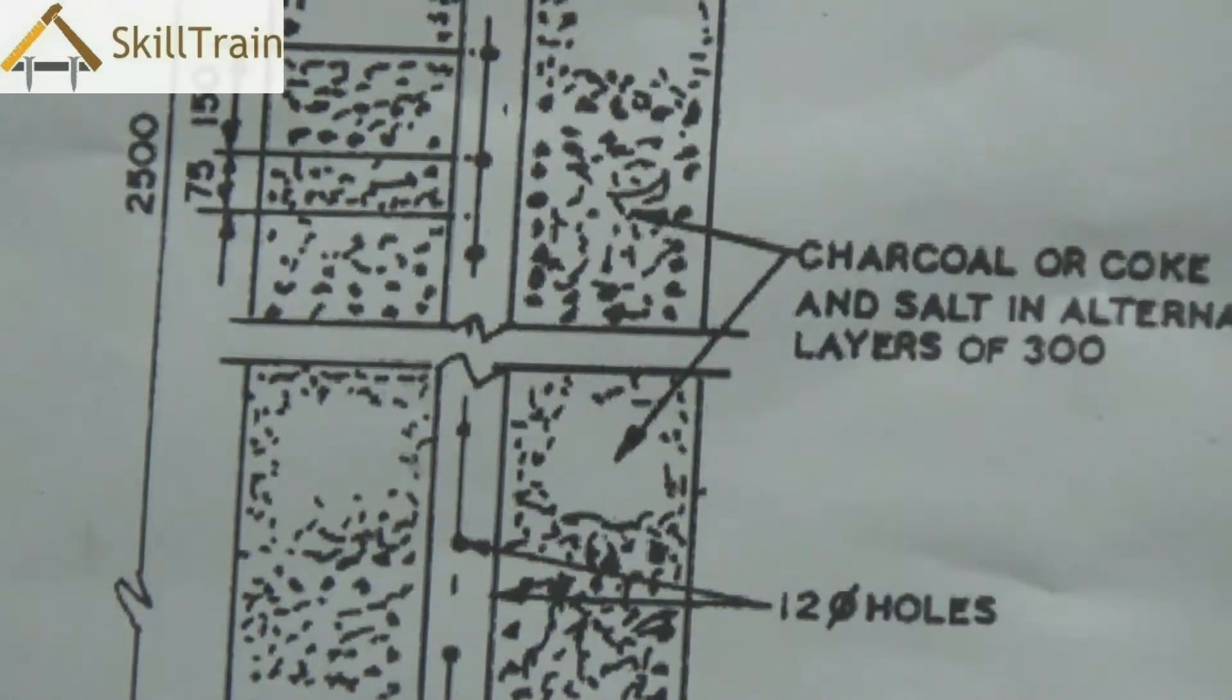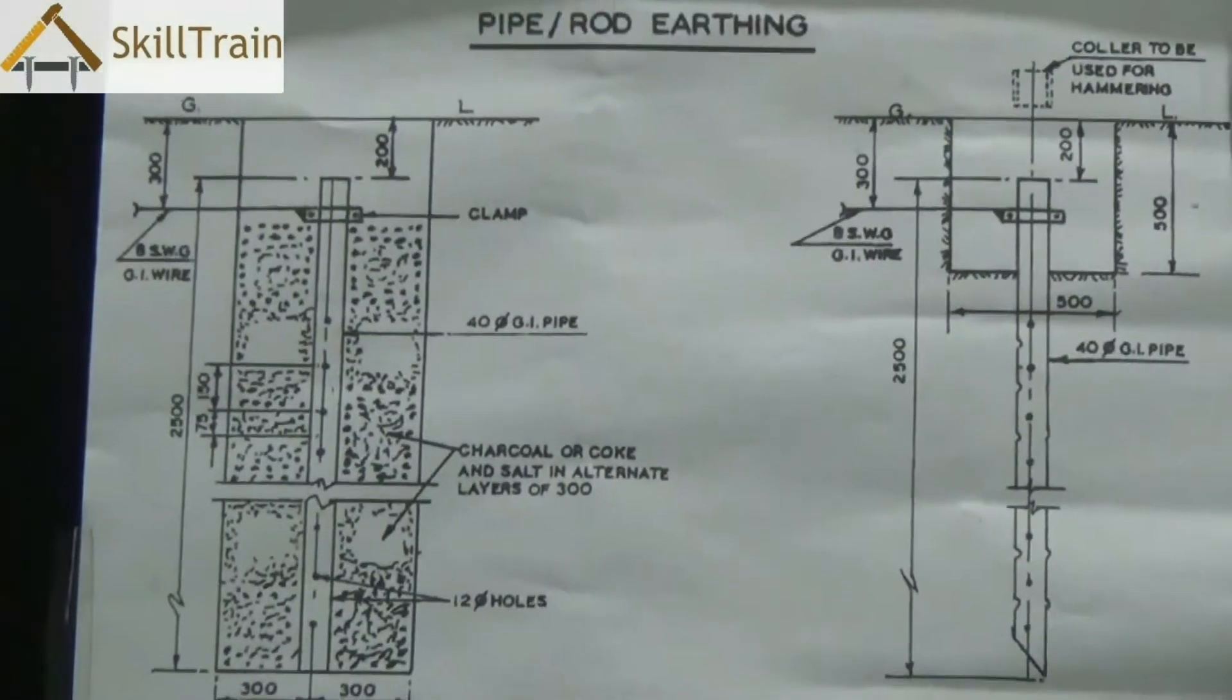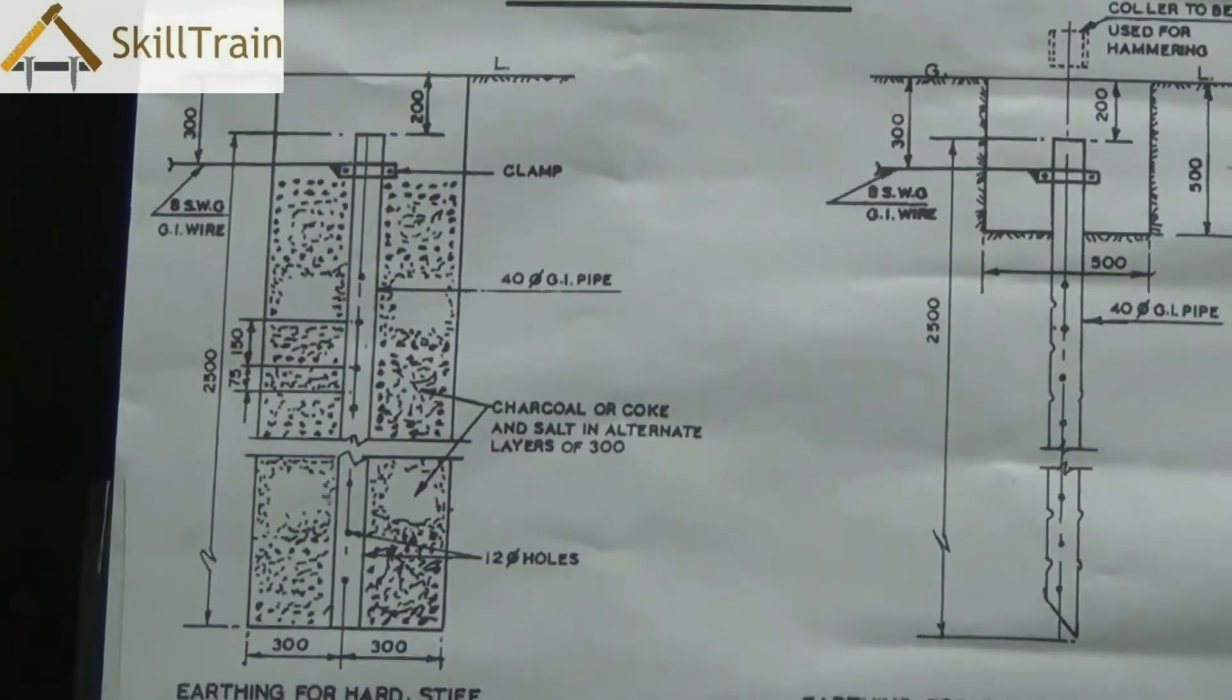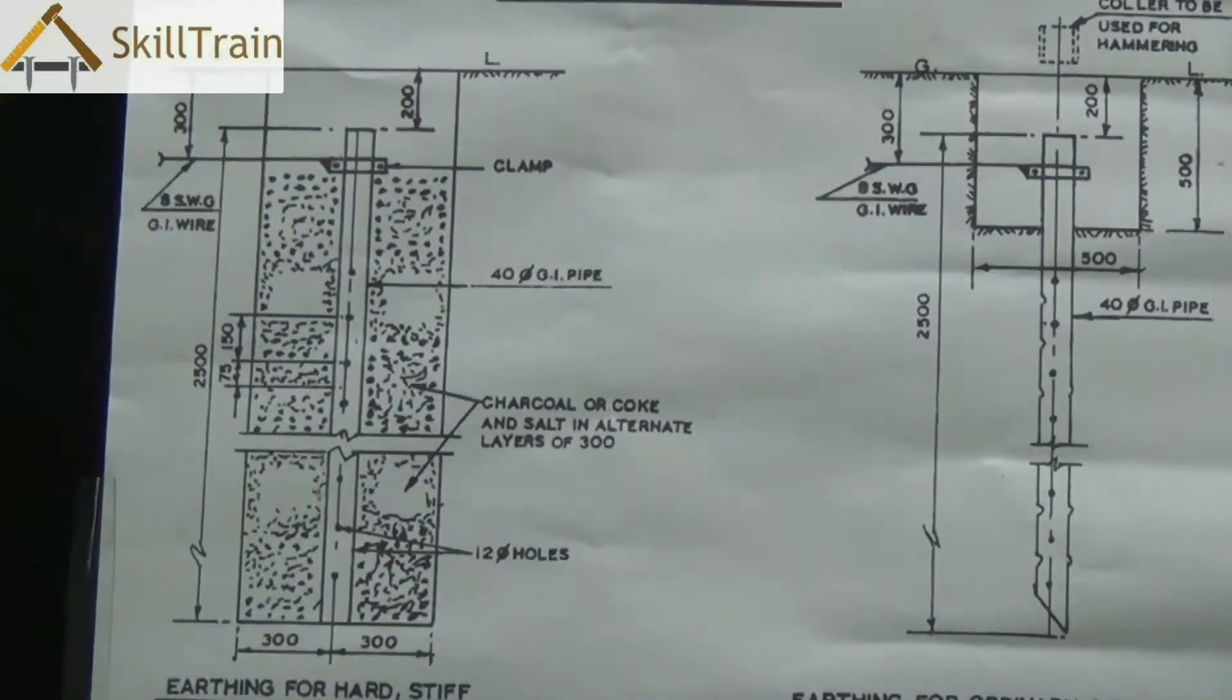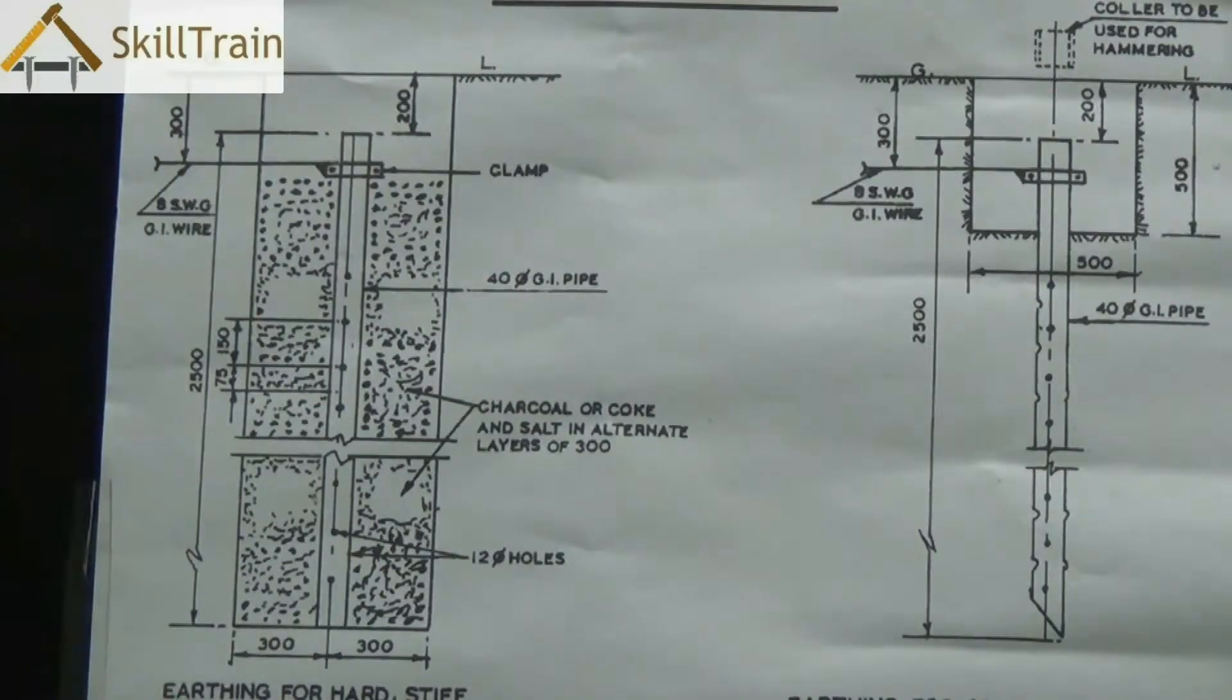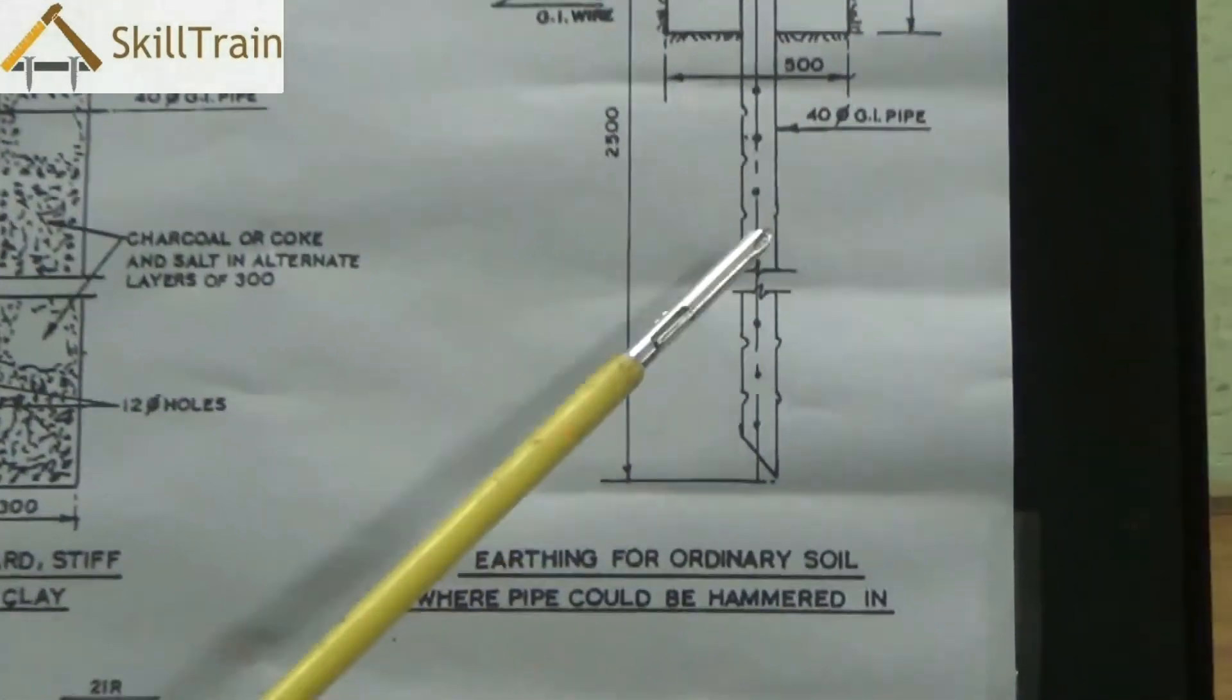This procedure of pipe earthing is far easier to do because you can straightaway insert a full GI pipe of 40 millimeters diameter straight into the earth. If it's a moisture surface, you don't need to keep watering it. Whereas if it's a hard surface, you may need to water it once in a while. But the frequency of watering is much lesser compared to the plate earthing style, and that is why this is maintenance free.